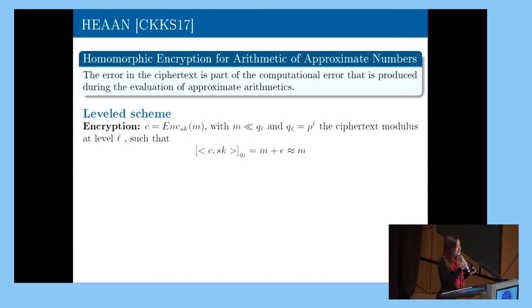So the result of this decryption will be the message plus the error. But since, in HEAN, the error is part of the computational error, we can say that it's just an approximation of the message.